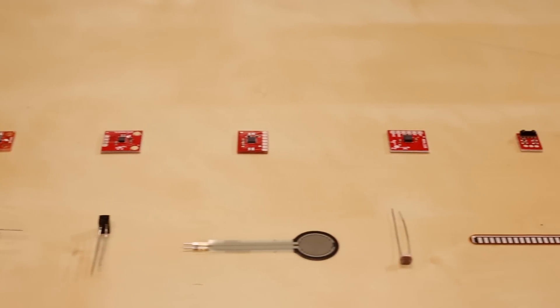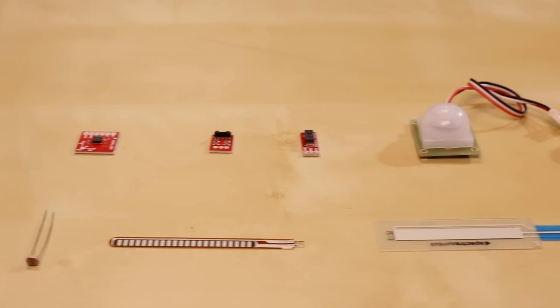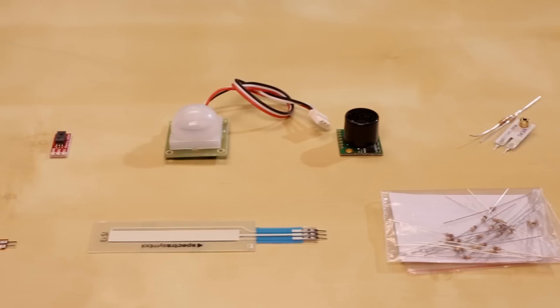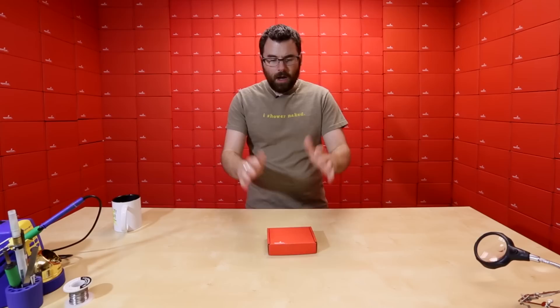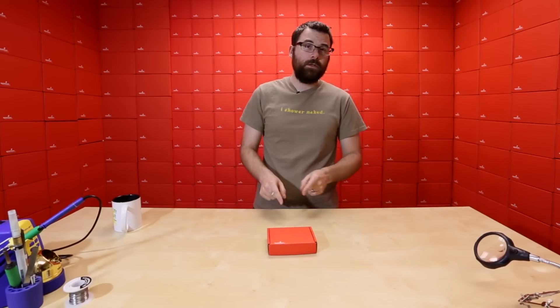So this is a new version of our sensor kit. The sensor kit is this box filled with all sorts of different sensors. We've got accelerometers, gyros, magnetometers, flex sensors, all sorts of stuff, all packed into this one little kit. So if you're looking for sensors, check out the sensor kit.